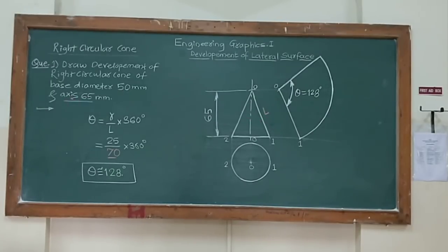For example if I change this problem with generator length as 80 mm. So directly you can start with the 80 mm as L and you can find out the theta with 80 as L.